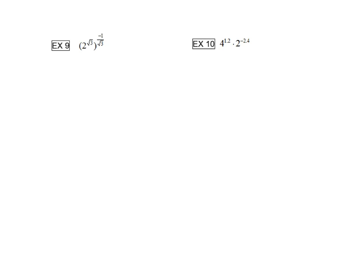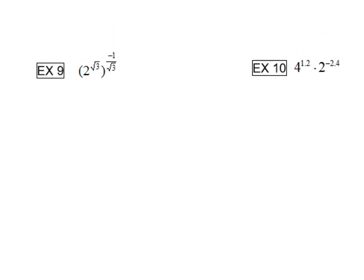All right, down to our last two examples. Example 9, we have 2 raised to the square root of 3 power, raised to the negative 1 over square root of 3 power. So what we want to recognize on this is that we have a power raised to a power. We can go ahead and multiply those exponents. We will keep our base of 2, but we can do square root of 3 times negative 1 over square root of 3.